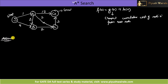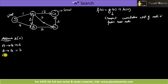Let us assume the heuristic values h(n) as follows: from A to G it will take around 6 units, from B to G it will take around 2 units, from C to G it will take around 1 unit, the heuristic value for the goal state G is 0, and from S to G we require around 7 units.